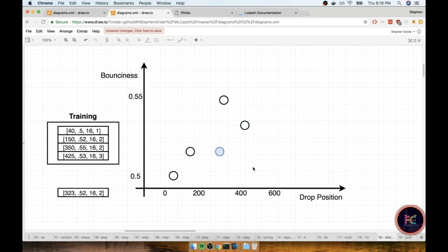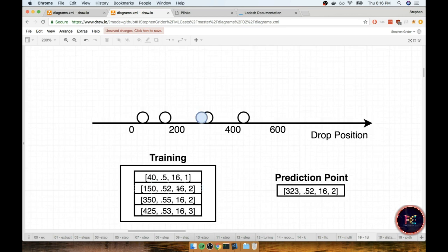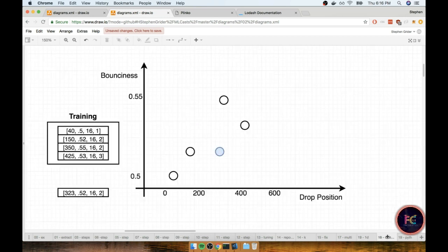Okay, so now we would want to find the distances between all these points and our prediction point, and see which one was closest. Now remember in our 1D case back over here, we had said that the 350 data point was very very similar to our prediction point. But now this time around, if you look, our same 350 point from the training set is all the way up here, and it no longer appears to be the closest to our prediction point.